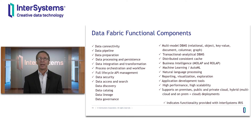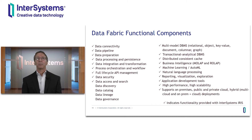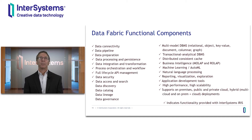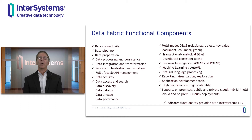Here's what we've seen as typical requirements for an enterprise data fabric from our customers and partners in production implementations, and as defined by analysts who speak with many organizations across a wide range of industries. There's data connectivity, data pipelining, data prep, data processing, persistence, integration, and transformation. There's process orchestration and human workflow, full lifecycle API management, security, access, search, and discovery, plus a whole range of analytics capabilities — all required. For those already using InterSystems IRIS, you have these capabilities out of the box. And if you're running on Cache or Ensemble, for a limited time you can migrate your existing licenses at no charge to InterSystems IRIS and gain all of this functionality.